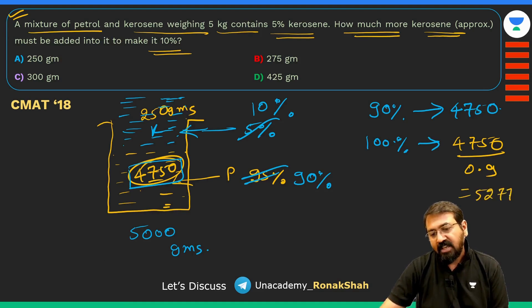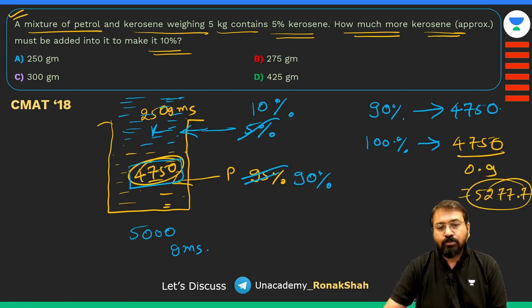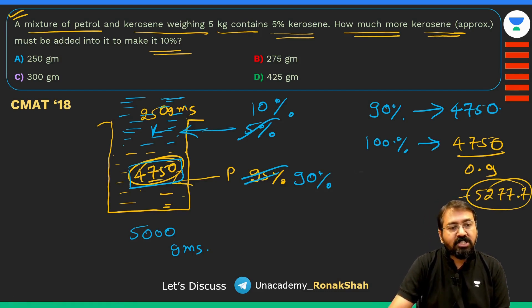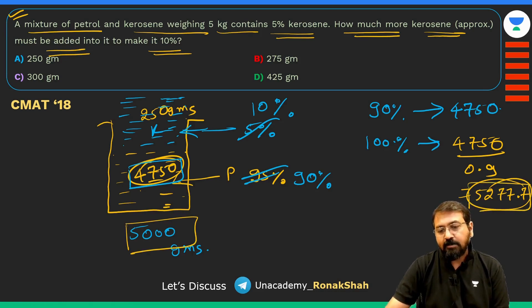So now I can say 90% is equal to 4750, so what will be 100%? At the beginning itself I had shown this calculation. This will be 4750 divided by 0.9, so this will come out to be 5277.7, approximately 5278. How much kerosene should be added?